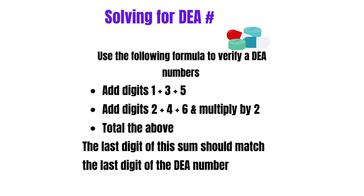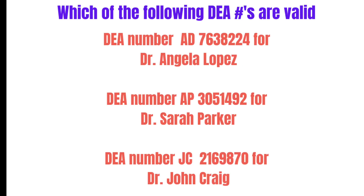Next, let's make sure we know how to validate a DEA number. To do that: add digits 1, 3, and 5 together. Then add digits 2, 4, and 6 together and multiply that sum by 2. Add those two results together — the last digit of the total sum should match the last digit of the DEA number. If it matches, the DEA number is valid. Here are some examples you can work through to check if they're valid or invalid.